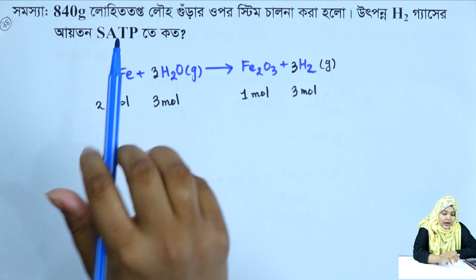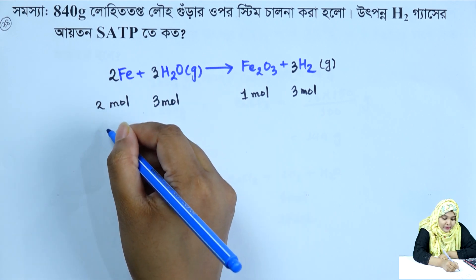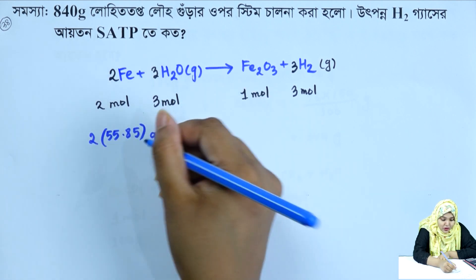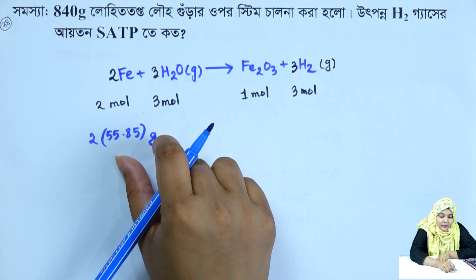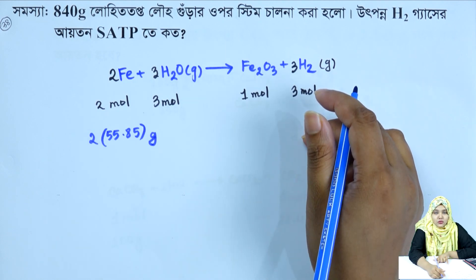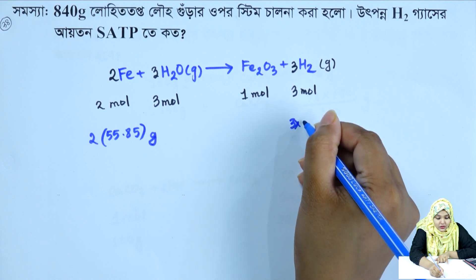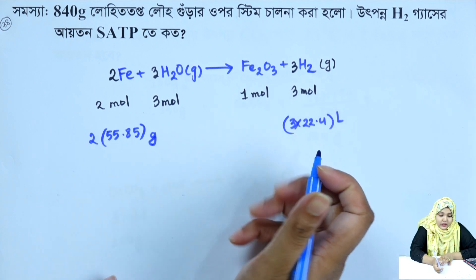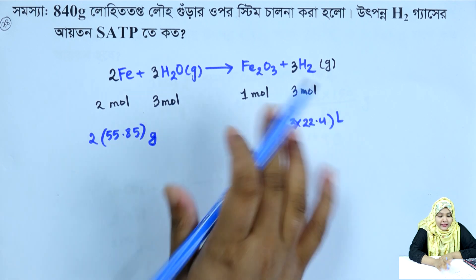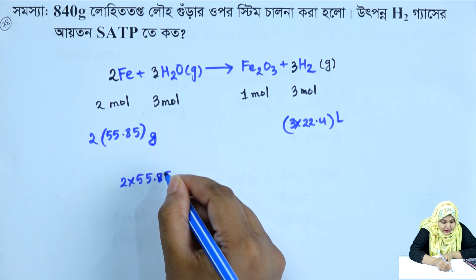There are 2 grams of hydrogen gas at STP; iron is 55.85 grams. This is 2 moles of iron. This is 3 moles of iron. STP is 22.4 liters. STP gives 3 moles of hydrogen gas, which is 3 into 22.4 liters. The question is that we have hydrogen gas volume as 3 into 22.4 liters.